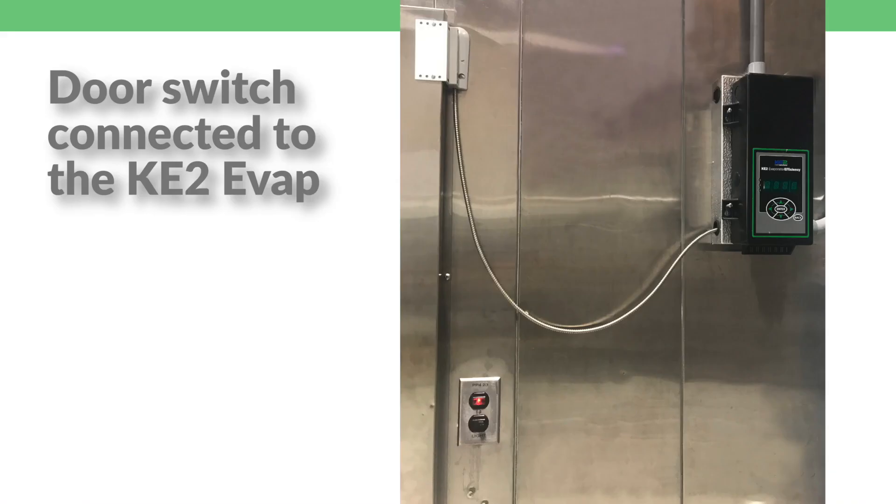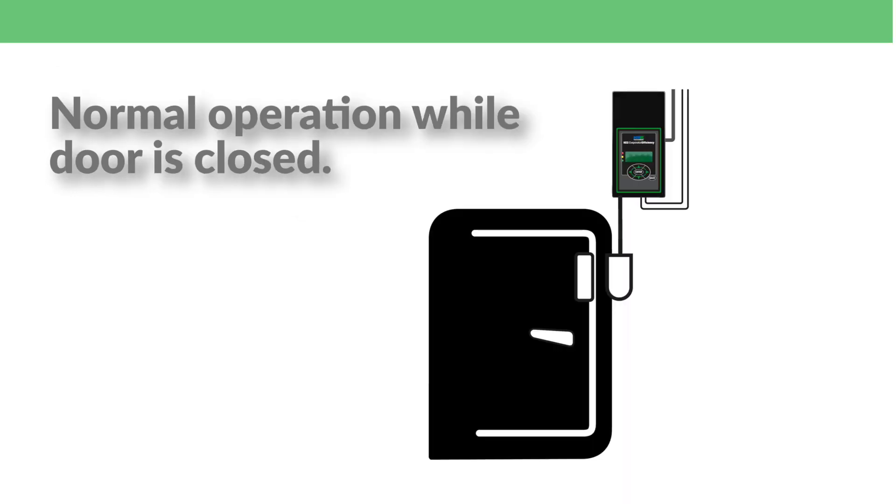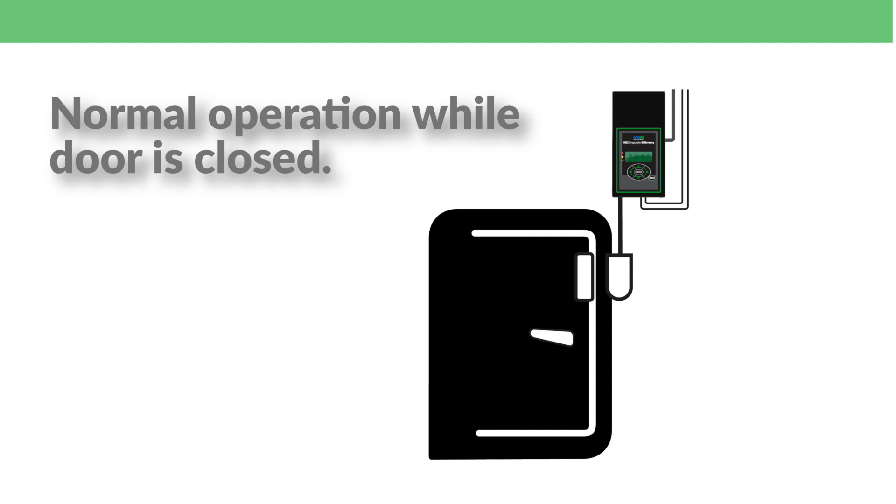With the door switch connected to the KE2 evaporator efficiency controller, for example, the system operates normally while the door is closed. When the door is opened, the evaporator fans are turned off. Once you close the door, normal operation continues.